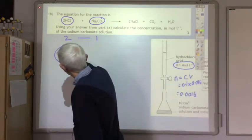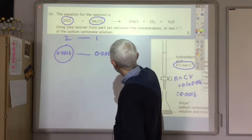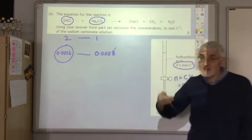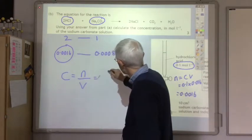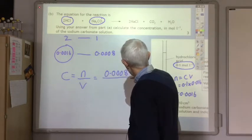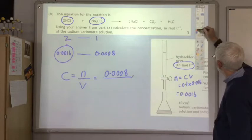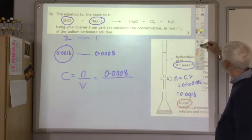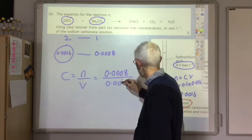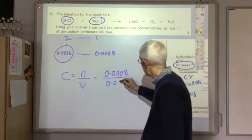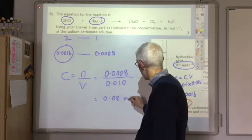The concentration of sodium carbonate = moles ÷ volume. Moles = 0.0008; volume of sodium carbonate = 10 cm³ = 0.010 L. Therefore concentration = 0.0008 ÷ 0.010 = 0.08 mol L⁻¹. Note: use the volume of sodium carbonate, not the volume of hydrochloric acid.